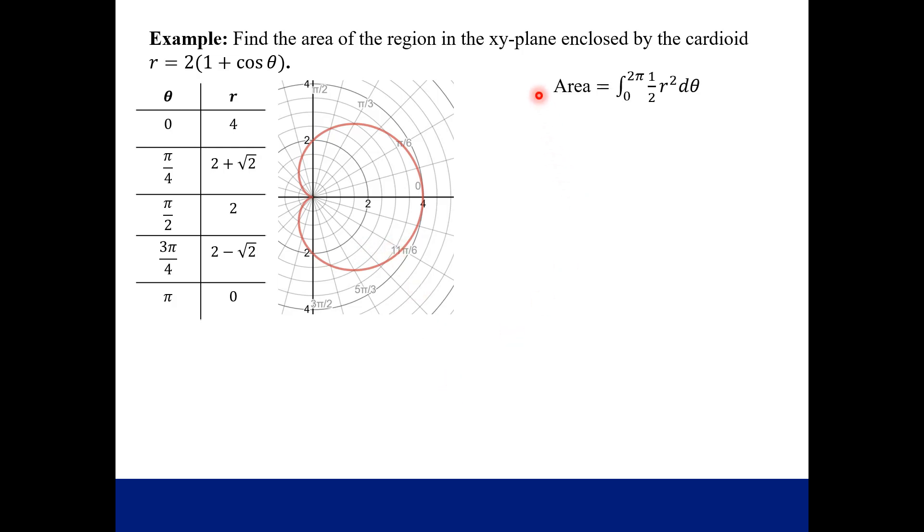We're going to use our integration formula for area and just fill in what we know. For this shape, what we can do is say that this shape would start at an angle of zero, and then it would sweep out just once to an angle of 2π. You can see that from your values here. Zero comma 4 would start you here. π over 2 comma 2, which is right here. Then at π, you're down here at zero. And then it would just mirror. So at 3π over 2, you'd be down here. And then at 2π, you'd be back at 4.